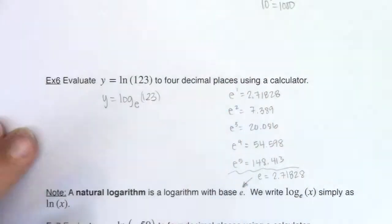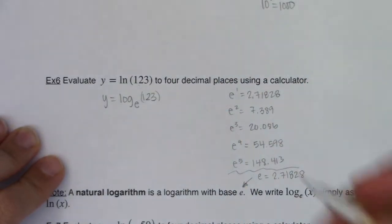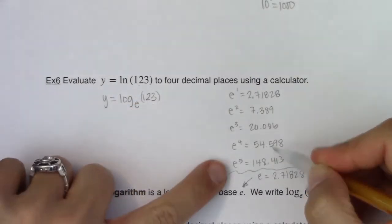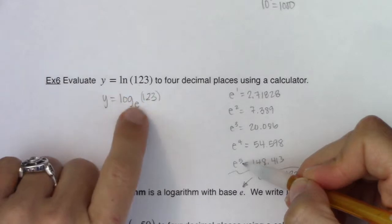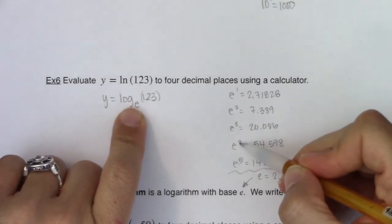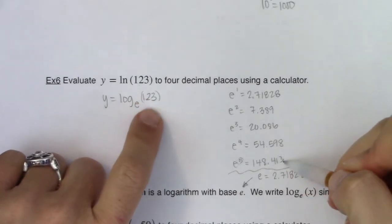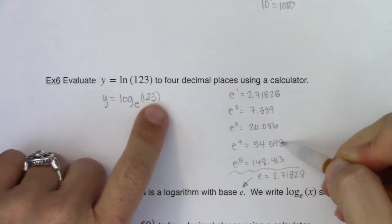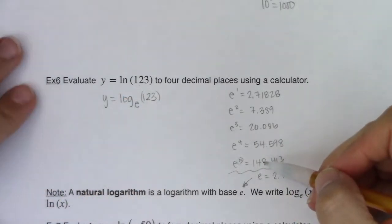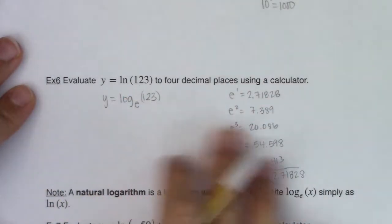Why I said that's the ticket is because you can see we passed right over 123. So that means I think the exponent here is going to be closer to five than it is to four, because 123 is closer to 148 than it is to 54. So if I had to guess, I'm thinking like 4.8.